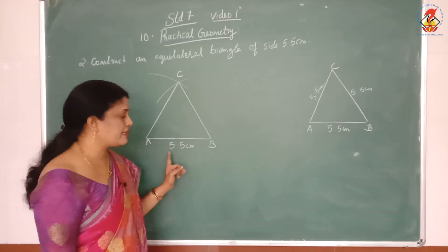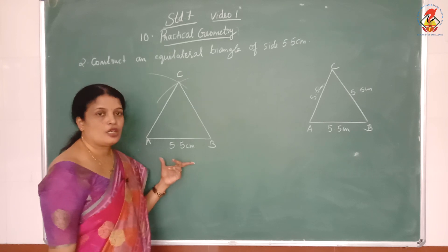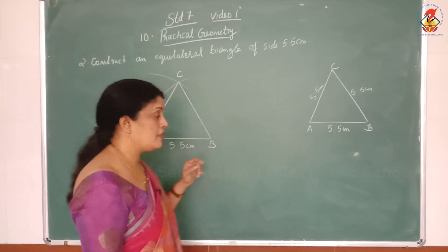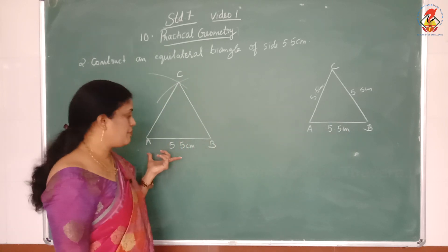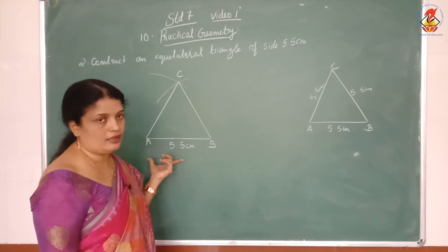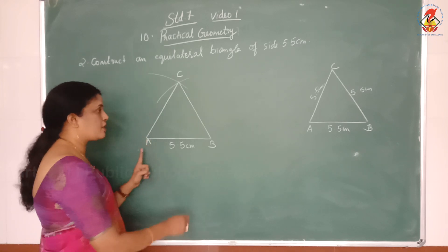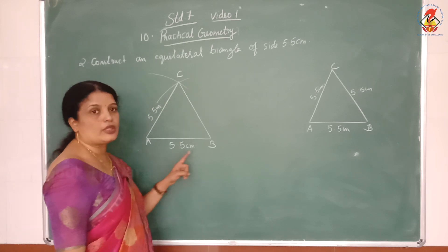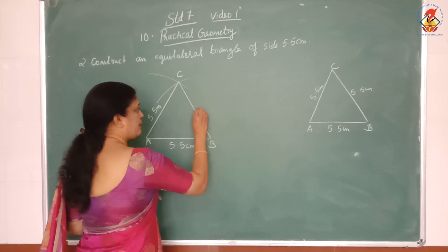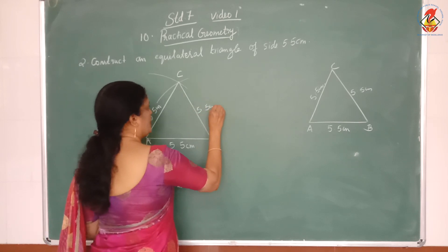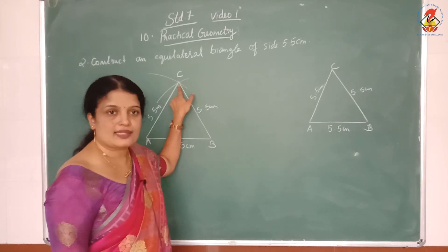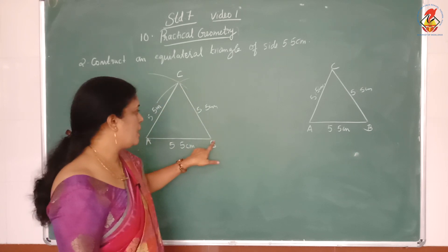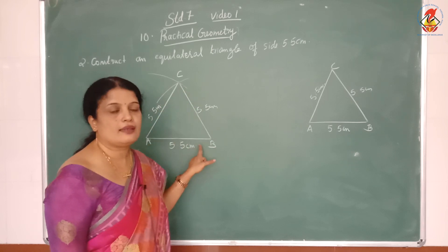Now write the steps for this construction. Step 1 — draw a rough figure with the given measurement. Step 2 — draw a line segment AB of length 5.5 cm. Step 3 — with A as center, draw an arc of radius 5.5 cm. Step 4 — with B as center, draw an arc of radius 5.5 cm. These two arcs meet at point C. Step 5 — join CA and CB. Triangle ABC is now obtained.